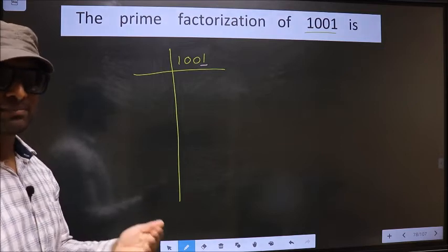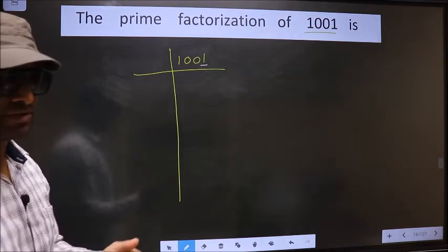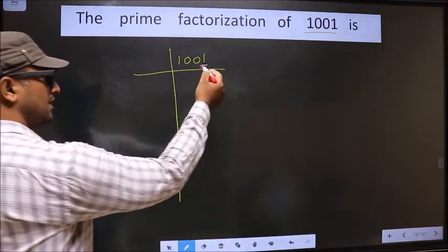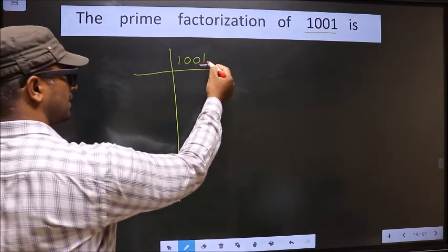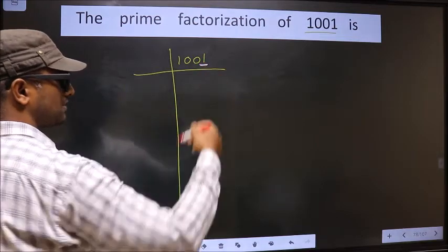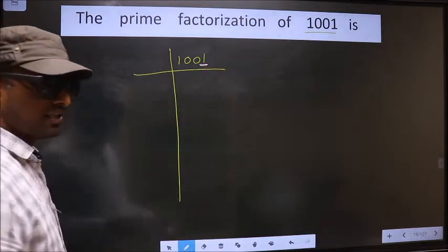Next prime number 5. Here the last digit is neither 0 nor 5, so this number is not divisible by 5.